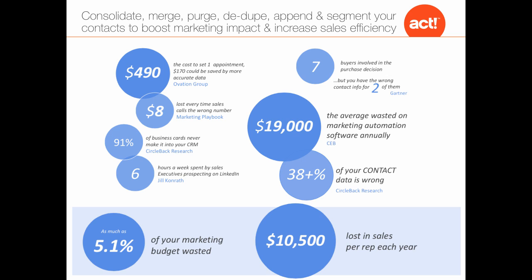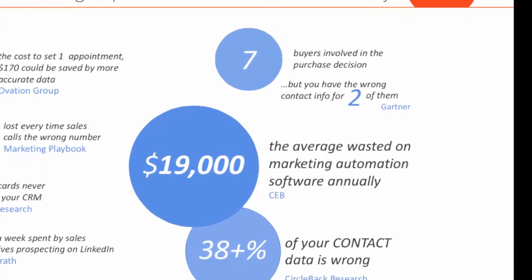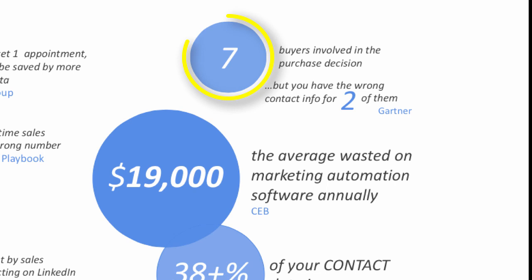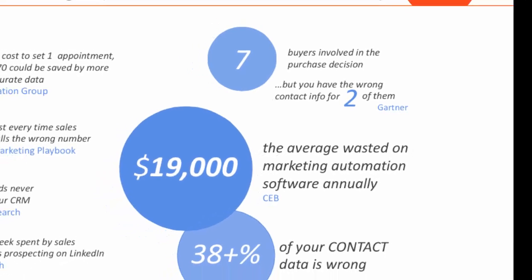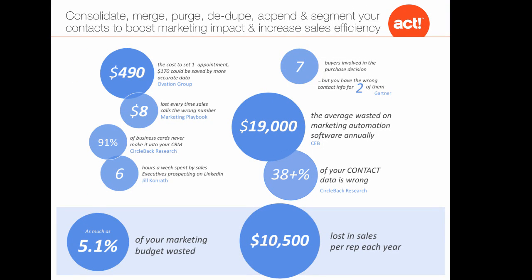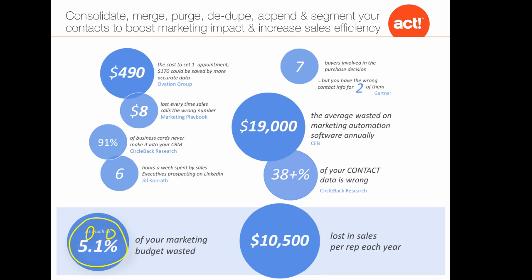As such, selling time is wasted. Did you know that there are seven people on average involved in making purchasing decisions today? You better make the first contact right. All of this adds up to a loss in productivity of up to $10,000 per rep and/or 5% of your marketing budget.